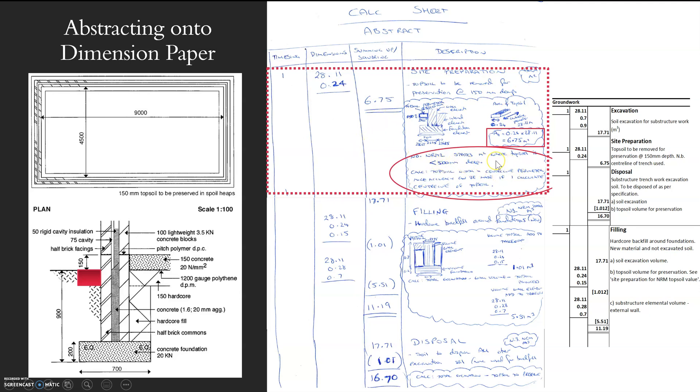New rules of measurement say that I need to measure this in meters squared where the topsoil is less than 500 meters deep. So I'm measuring it in meters squared. So I've only got two dimensions to tie them together here.